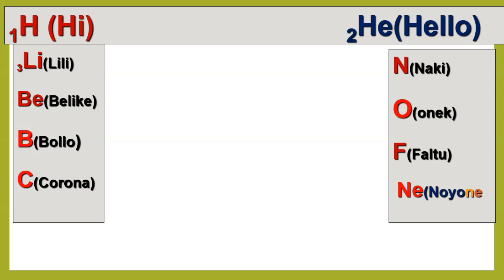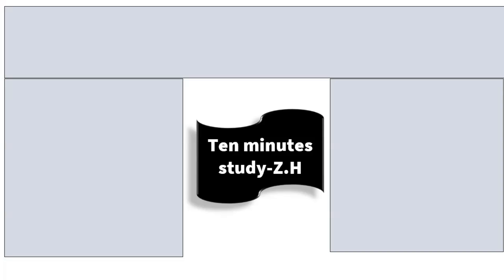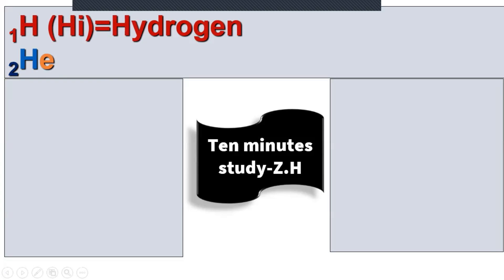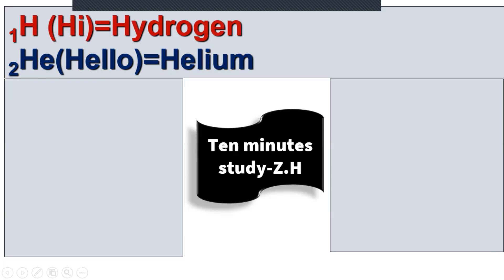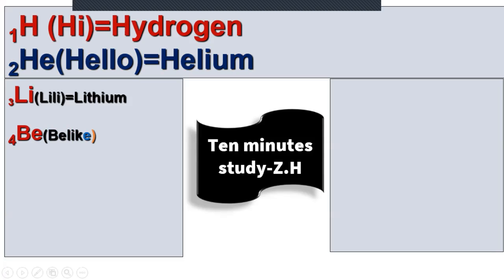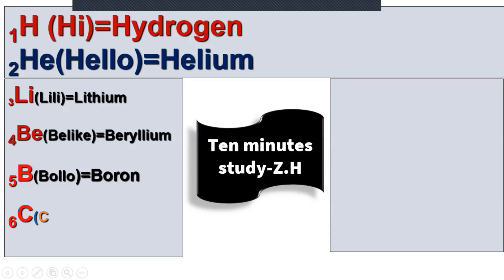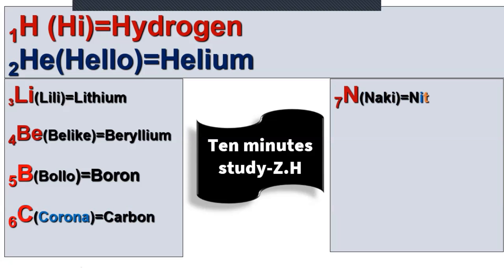'Hi hello, lily belly ke baron kore na ki, anek full nilo.' Hi = hydrogen, hello = helium. Lily = lithium, belly = beryllium. Ke = number four beryllium. Boron — and corona! Oh my god, corona = carbon. Na ki — number seven, corona na ki = nitrogen.